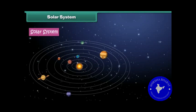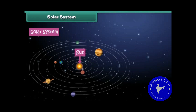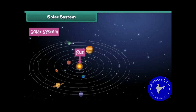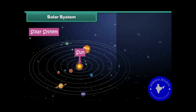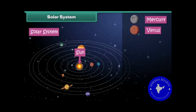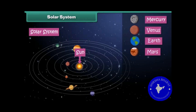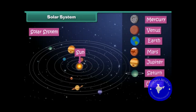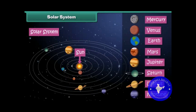We live in the solar system. The solar system is the family of the Sun and its eight planets. In the solar system the Sun is placed at the center and the eight planets revolve around it. The eight planets are Mercury, Venus, Earth, Mars, Jupiter, Saturn, Uranus, and Neptune.